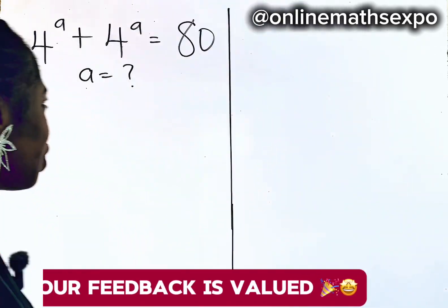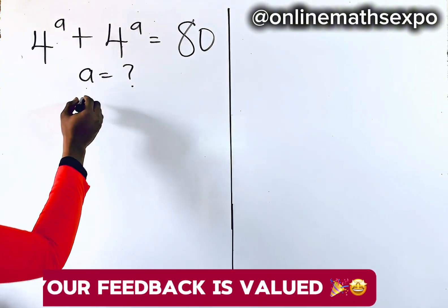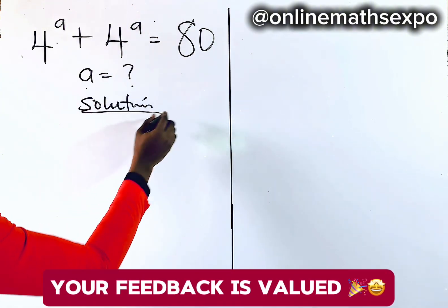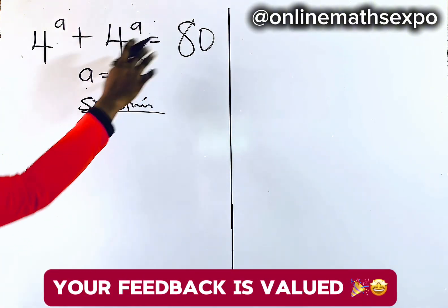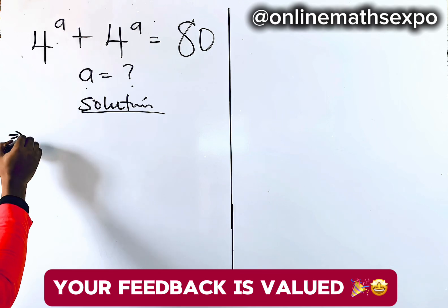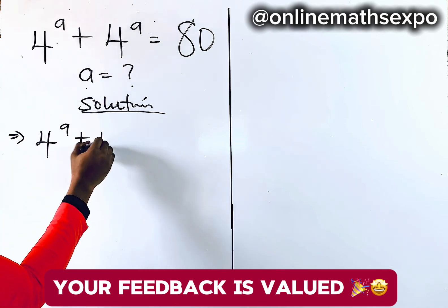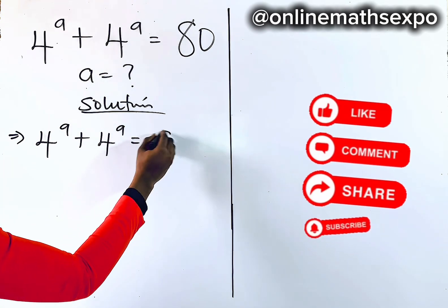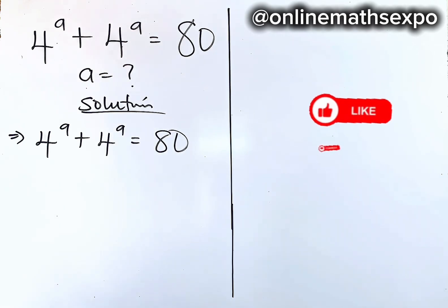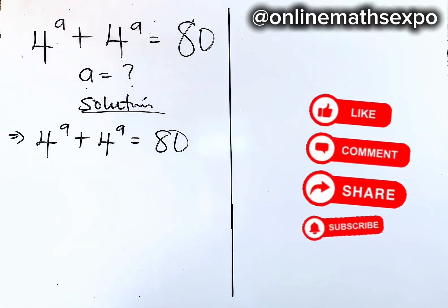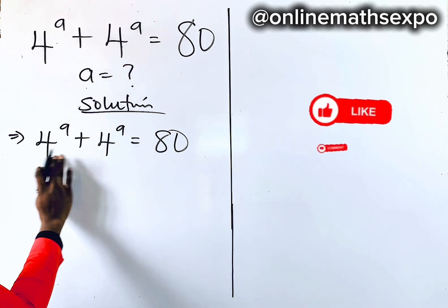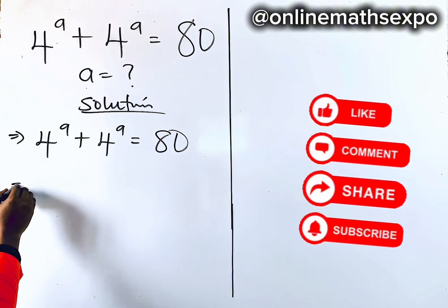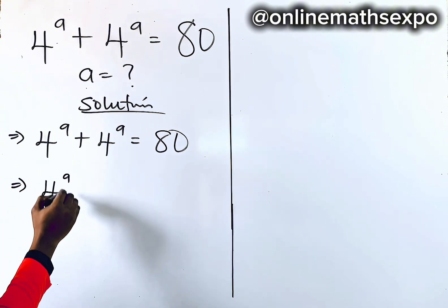Now to solve this, we begin with the solution. So let's repeat: 4 to the power of 8 plus 4 to the power of 8 is equal to 80. From the left part, you observe that this term is repeated, so we can choose to factor it out.